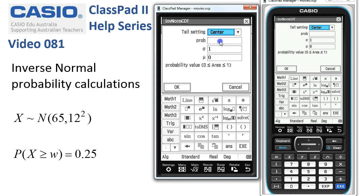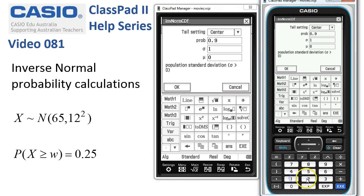This time we want the central 90%. If you were trying to find the interquartile range you'd be finding the middle 50%. But here we want the probability of 0.9. Standard deviation 12. Mean 65.